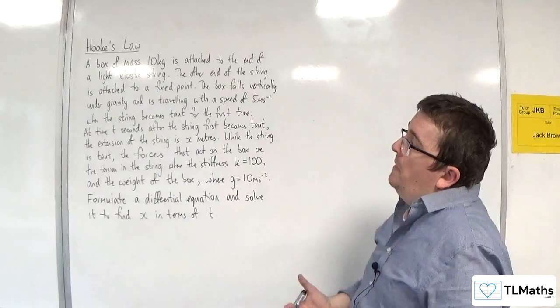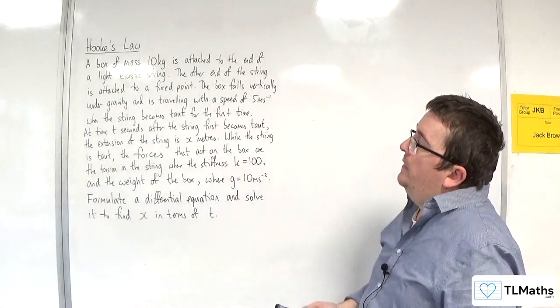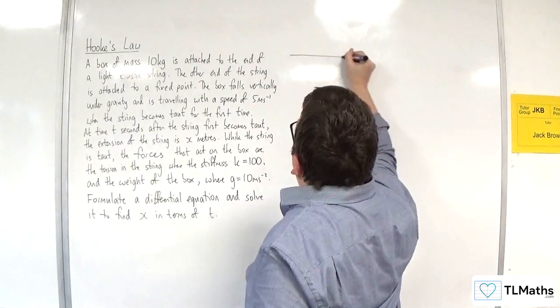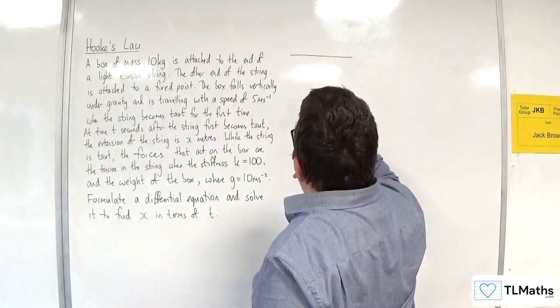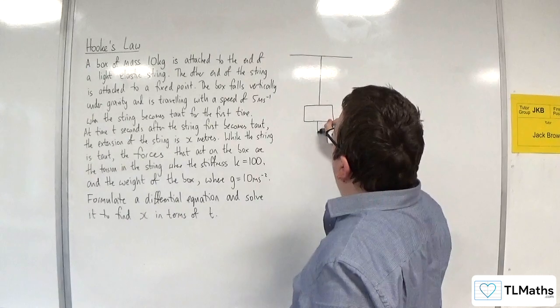In this video, we've got a box of mass 10 kilos attached to the end of a light elastic string. The other end of the string is attached to a fixed point. So let's draw a diagram. Here's our box, it's attached to a fixed point like so.